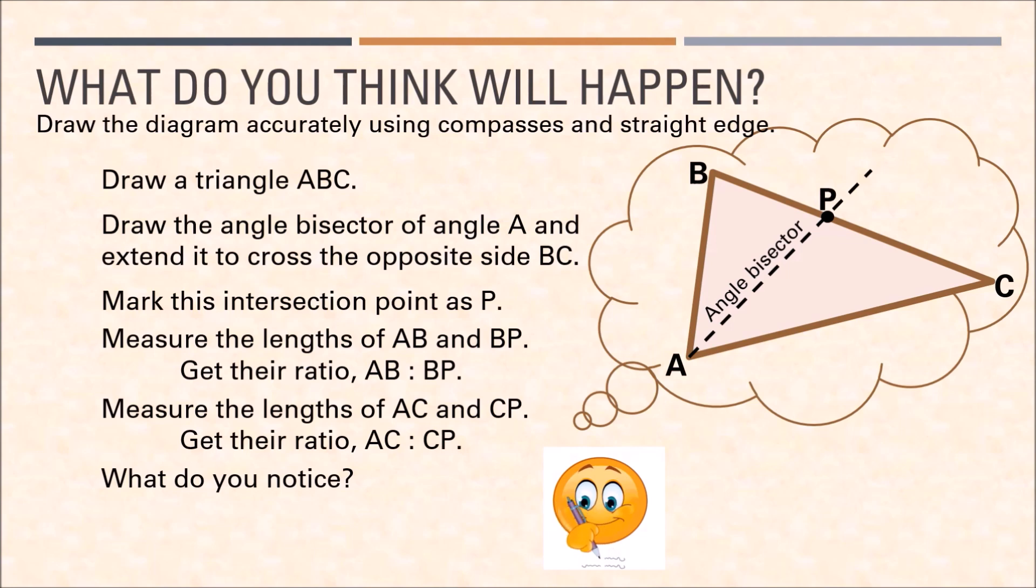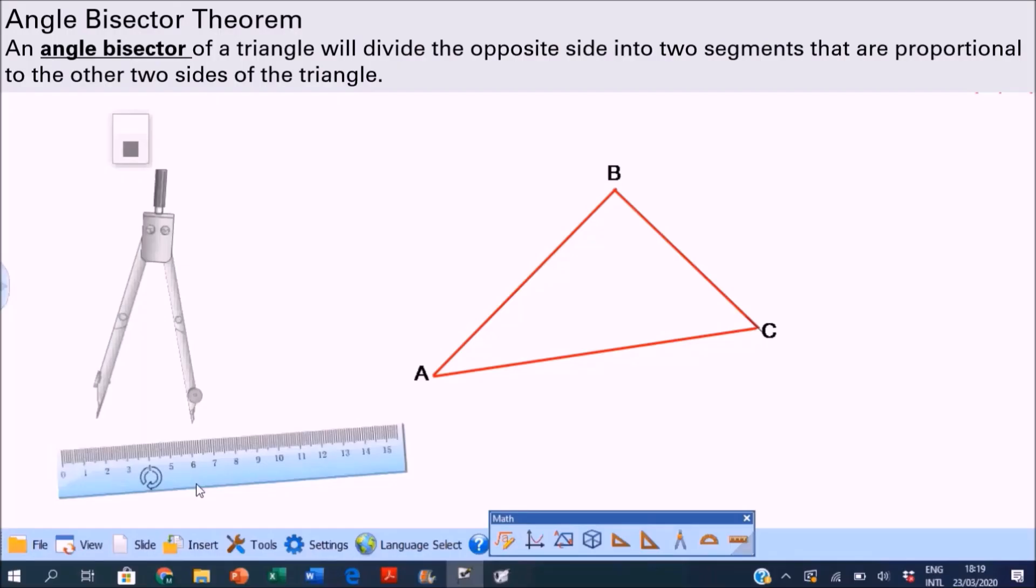And what did you find out? Let's see if we get the same result. So here is my triangle ABC. I chose to bisect angle A, so place the compass on vertex A, then draw an arc intersecting AC and AB.